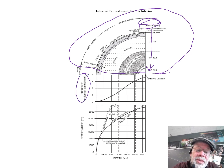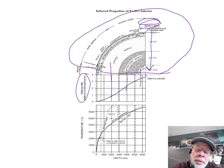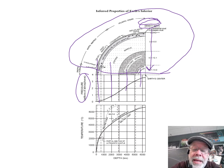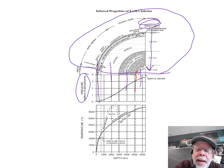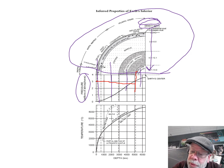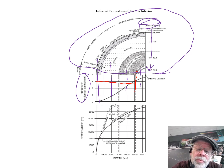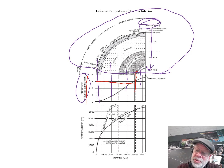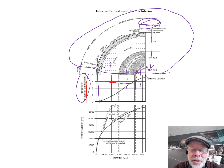You can read pressure and temperature at any depth from the chart. For example, the pressure at the inner-outer core boundary reads as 3 — that's 3 million atmospheres of pressure. For temperature: the outer core-mantle boundary is about 5,000 degrees Celsius. You can find temperature and pressure anywhere inside the Earth using this chart.